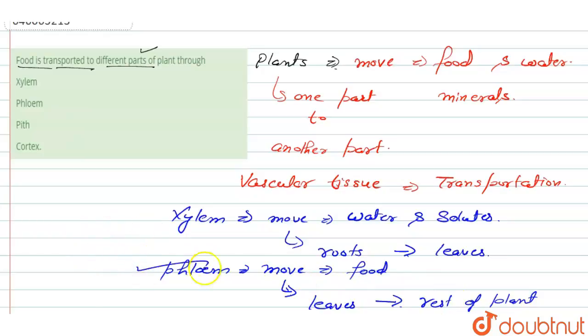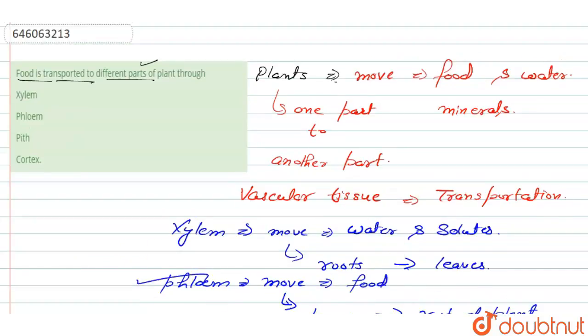Then here we can say that the phloem is the transporting system of the food in the plants. So the right answer for our question is option number B, that is phloem.